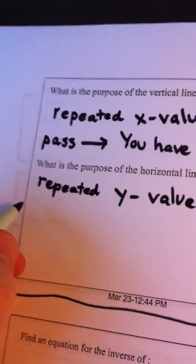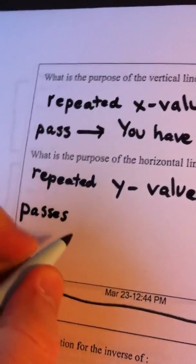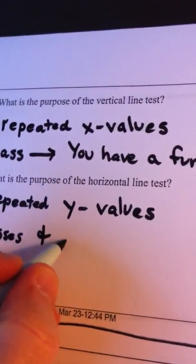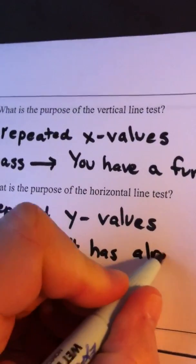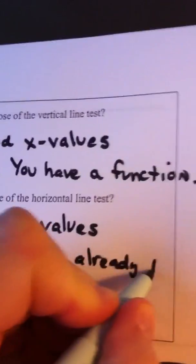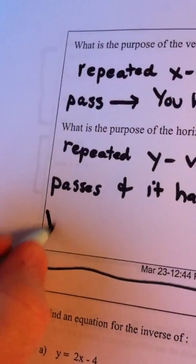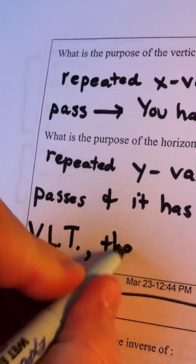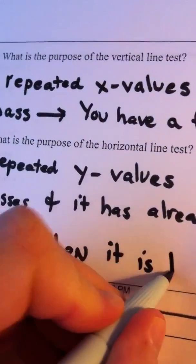which tests for repeated y-values. If it passes, and it has already passed the vertical line test, then it is one-to-one.